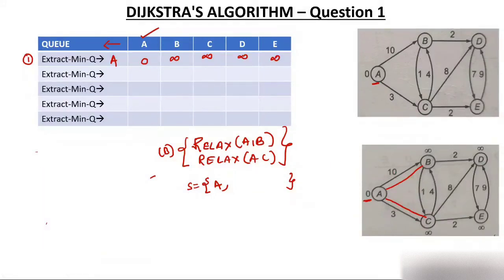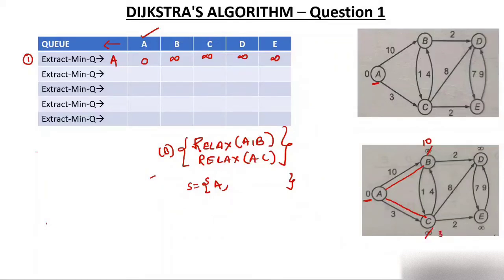Now let's begin solving fast. A double line indicates who identified a node — A identified B and C, so A is the parent of B and C. Relaxing: 0+10 is less than infinity, so B becomes 10. And 0+3 is less than infinity, so C becomes 3. After this iteration, B=10 and C=3.